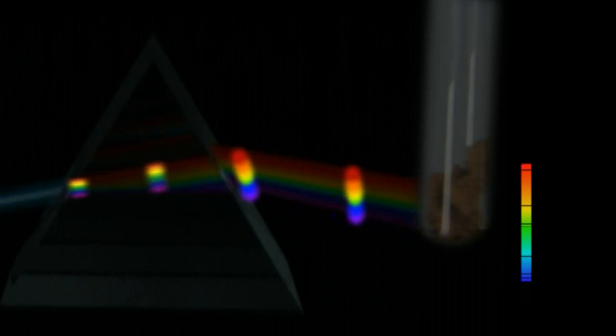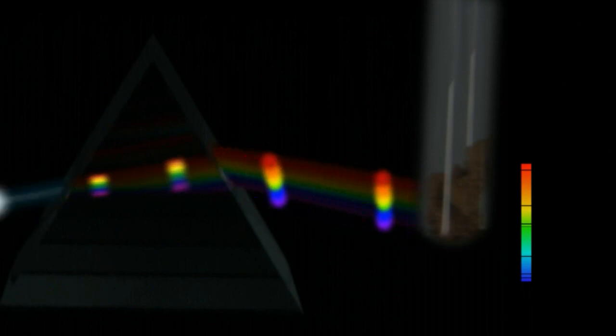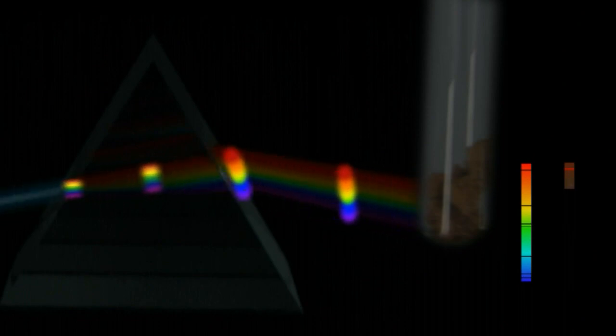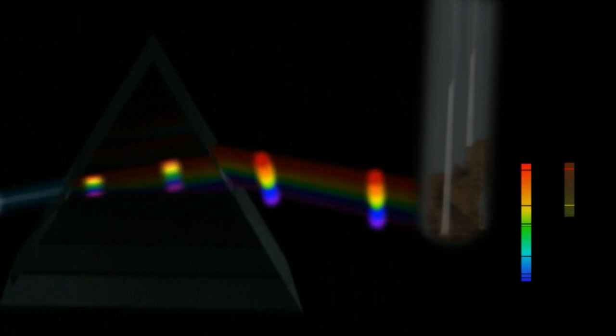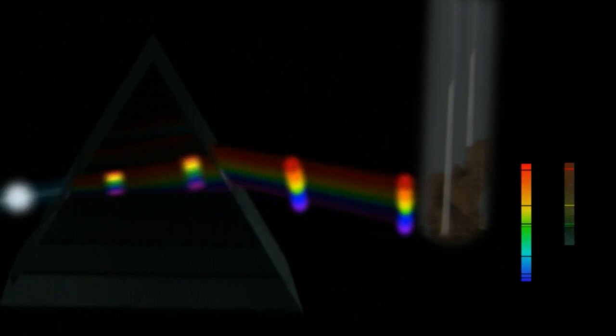And when those electrons spontaneously jump back down to the lowest energy levels, that emission spectrum contains only the lines that match the difference in the energy shells within the atom.